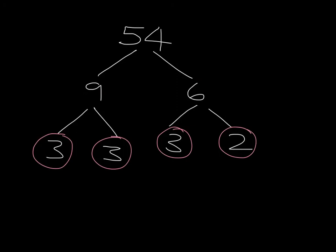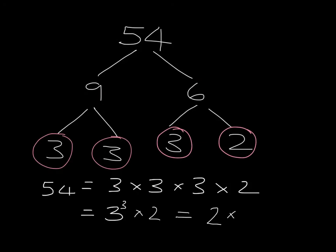And now everything is circled so I can stop. So I can write out that 54 is made up of 3 times 3 times 3 times 2. And if I want to write that nicely in exponential form, what I note is I've got one, two, three threes, which I write like this. Three threes multiplied by 2. And if I want to make it even prettier, I can just put it in order and say it's 2 times 3 cubed.